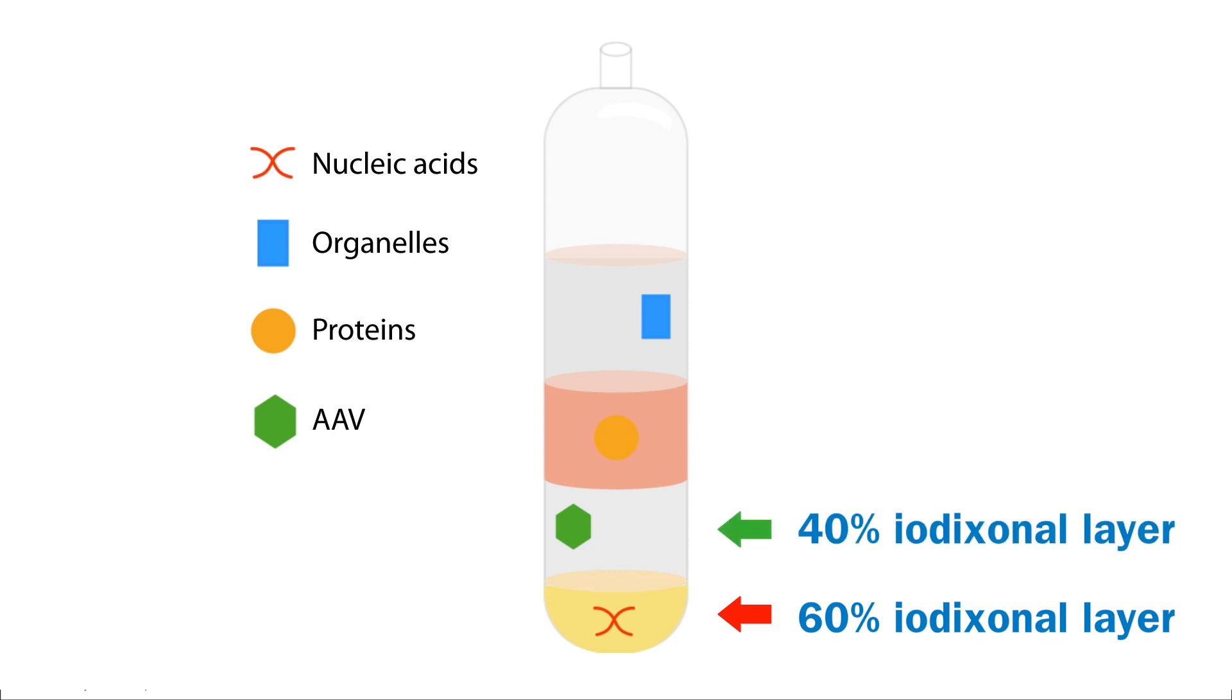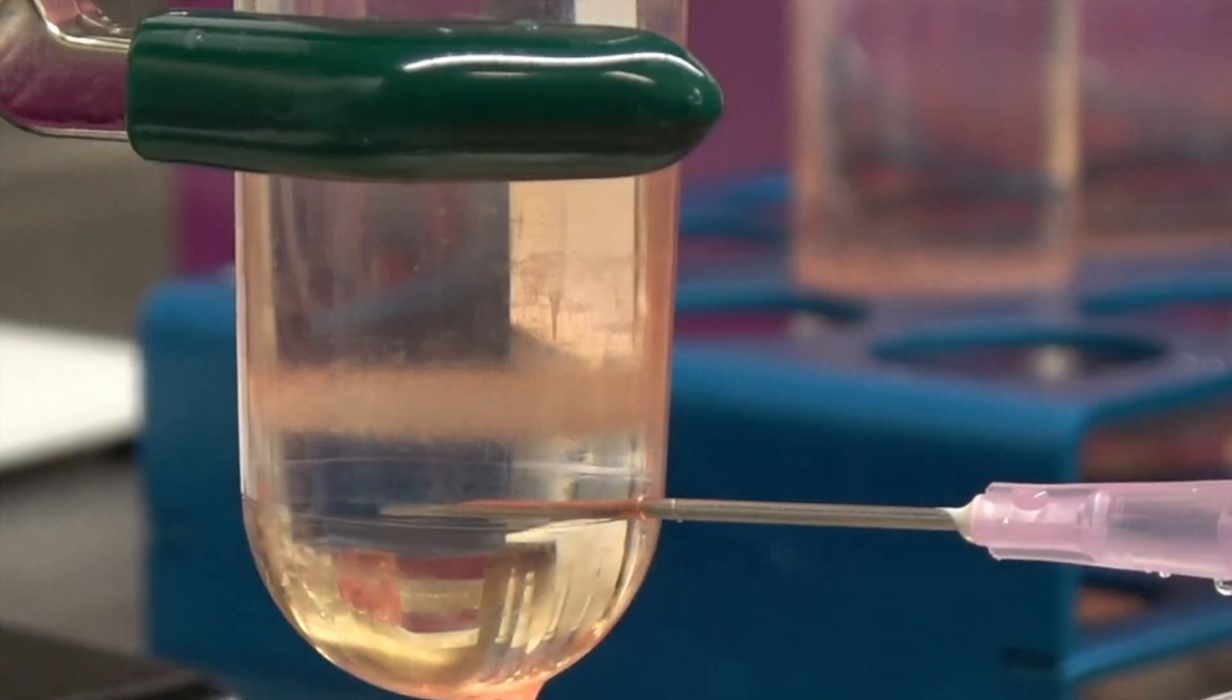But you also don't want to collect too much of the yellow 60% layer, because this layer has the most iodixanol, which you will have to remove later in the protocol. Be sure to insert the needle with the bevel pointed up, so that the liquid easily enters the needle from the top.